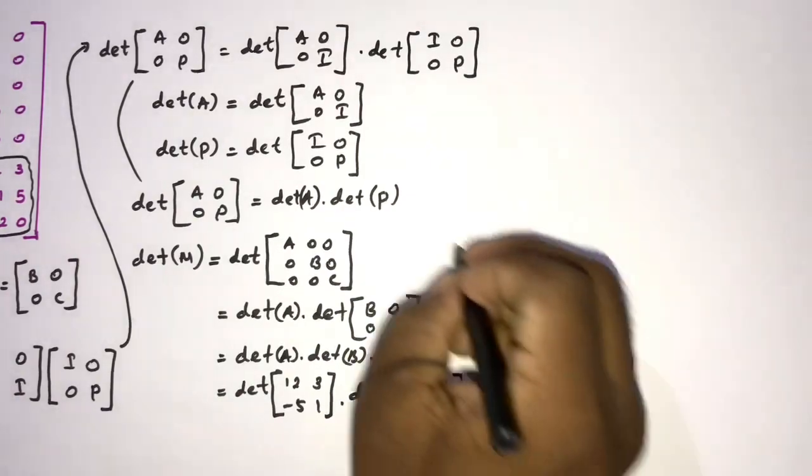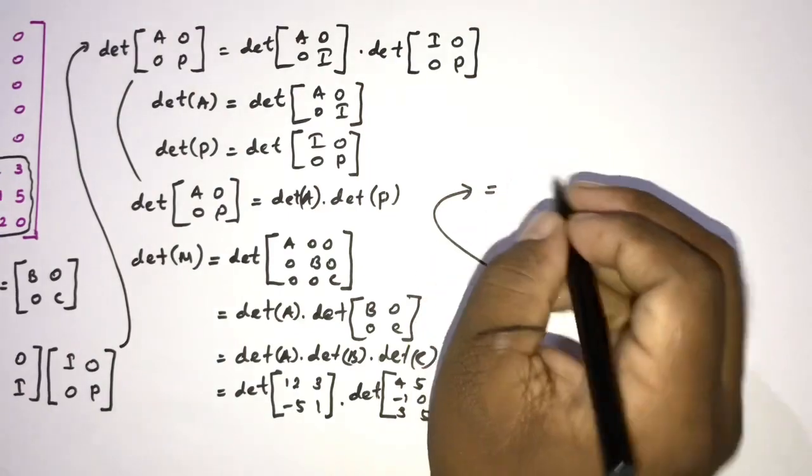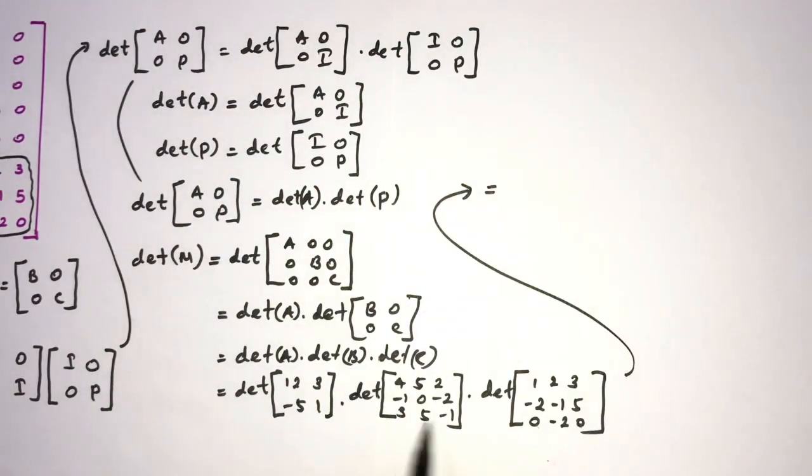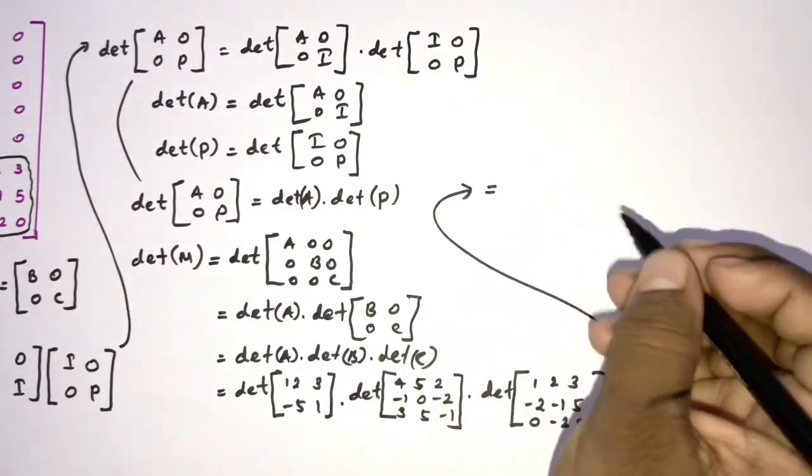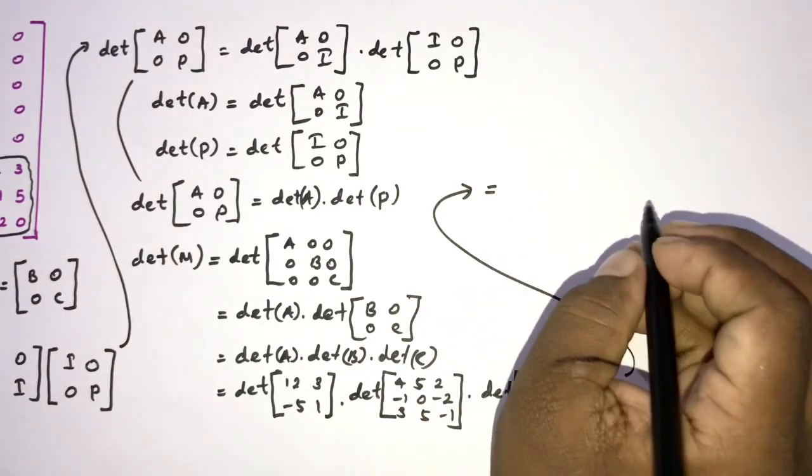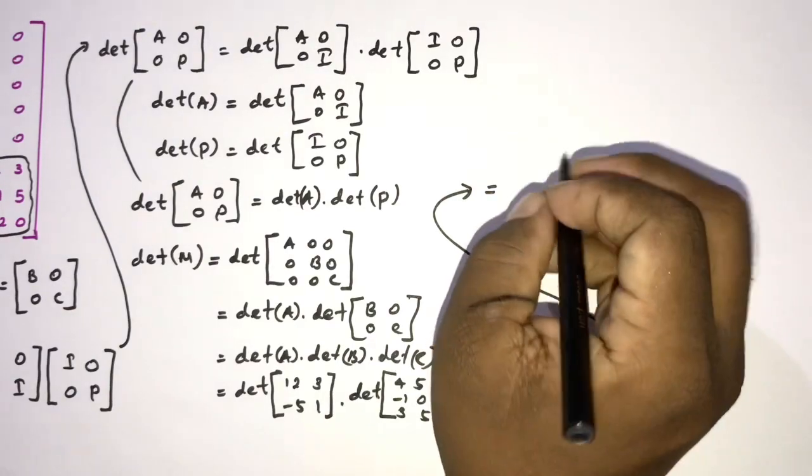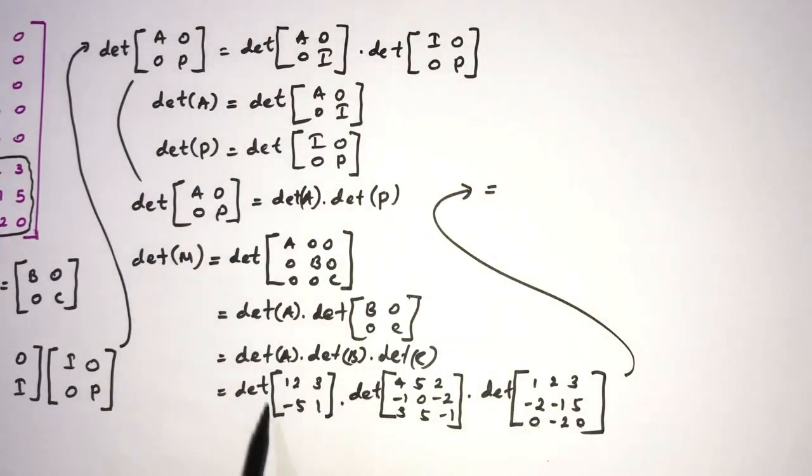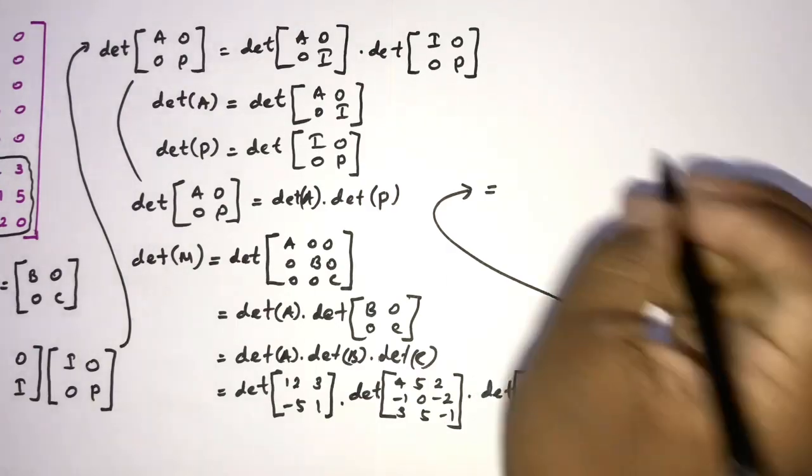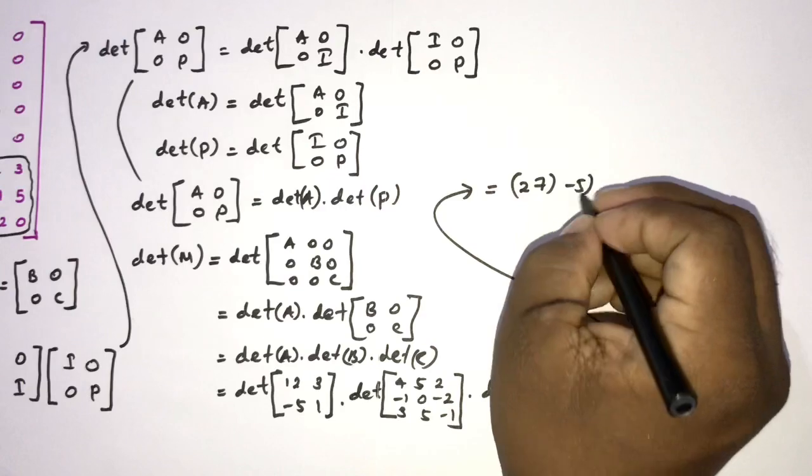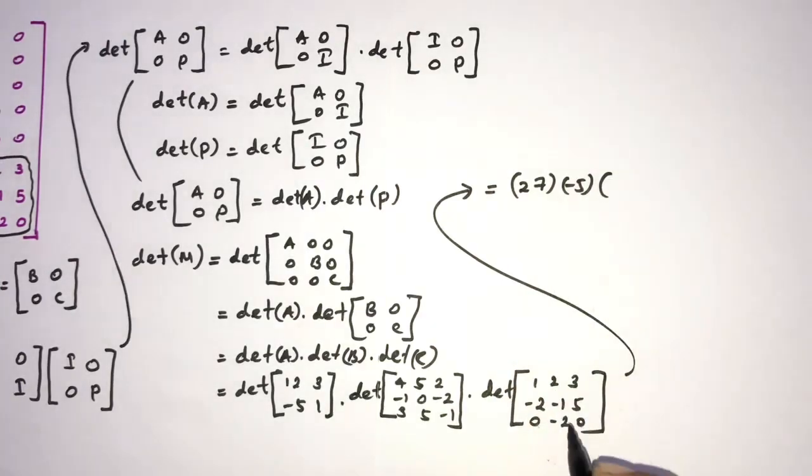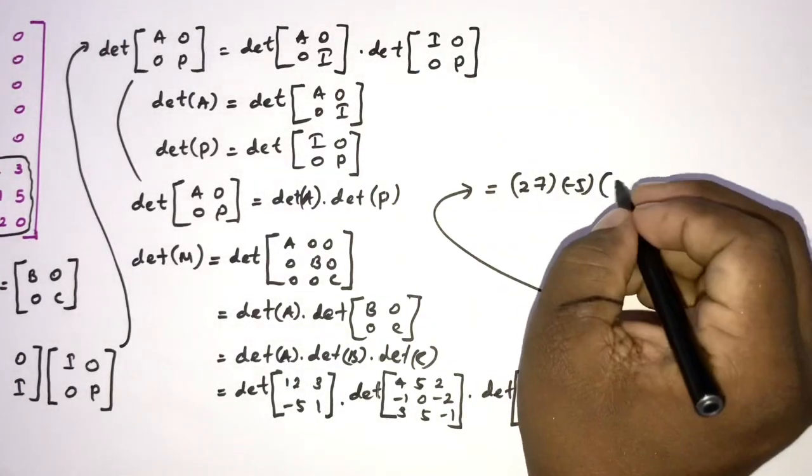Okay, then if we simplify here, now we can easily find the determinant of this matrix. So here we have, I skipped that process. So here we have determinant of this matrix is equal to 27, then here we have minus 5, then here we have 22.